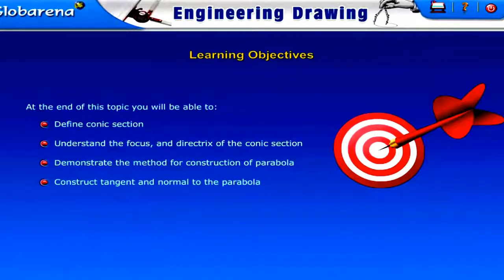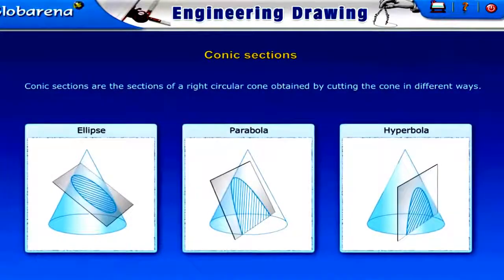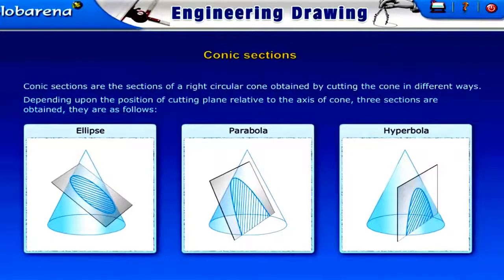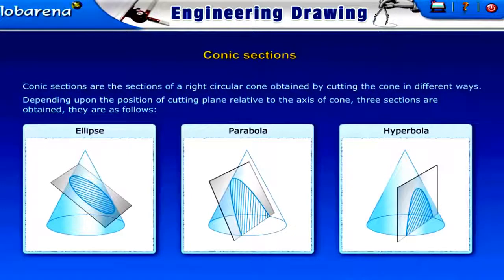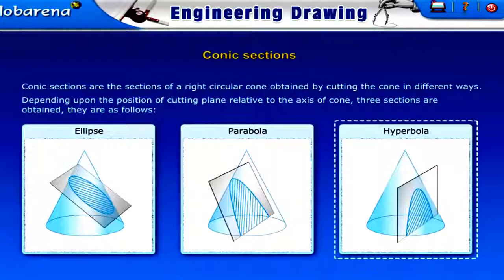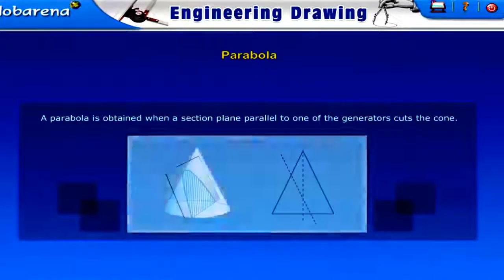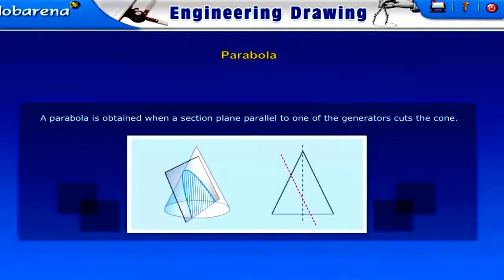Conic sections are the sections of a right circular cone, obtained by cutting the cone in different ways depending upon the position of the cutting plane relative to the axis of the cone. Three sections are obtained: ellipse, parabola, and hyperbola. A parabola is obtained when the sectioned plane parallel to one generator cuts the cone.